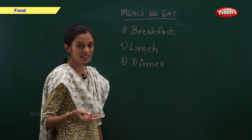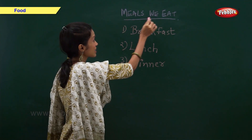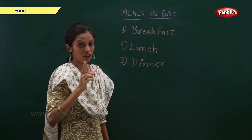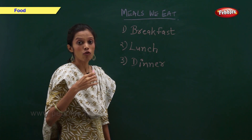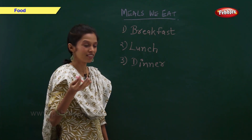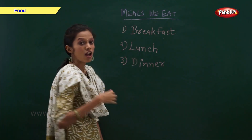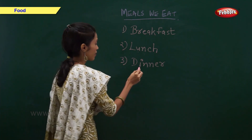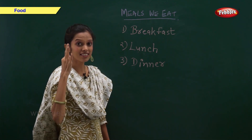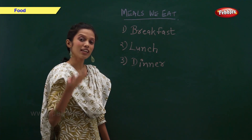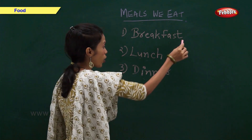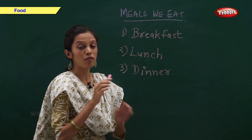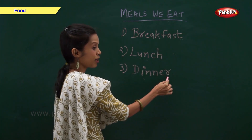Now, let us have a look at the meals we eat every day. Breakfast is the first meal we eat in the morning. Lunch is the second meal we eat in the afternoon. Dinner is the third meal we eat in the evening. All three meals are very important for us and we should not skip any one of them.